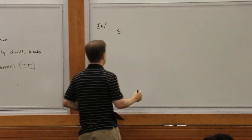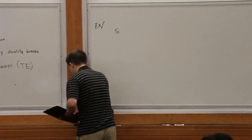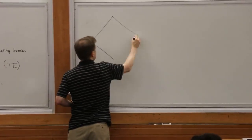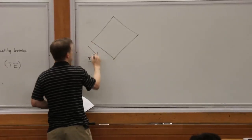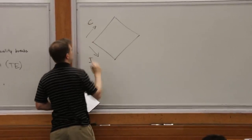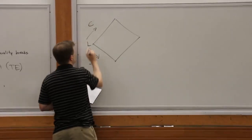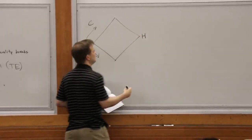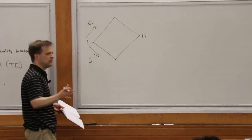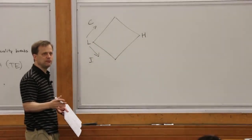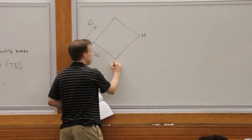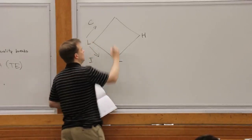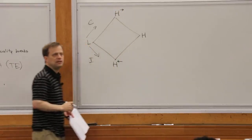Let me give you a lattice to think about — the same lattice I drew last time. We have integrity going down to the right, confidentiality going up to the right. We have a low security principle L, an untrusted label L, and a really trusted label H, which corresponds to lots of integrity and confidentiality. Then we have high integrity but no confidentiality, and high confidentiality but no integrity.